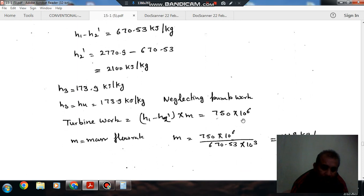Total turbine power is given as 750 megawatts, or 750 times 10 to the 6 watts. M is the mass of steam flowing. Turbine power is M times the change in specific energy, h1 minus h2, equals 750 times 10 to the 6. From this we can find out M.